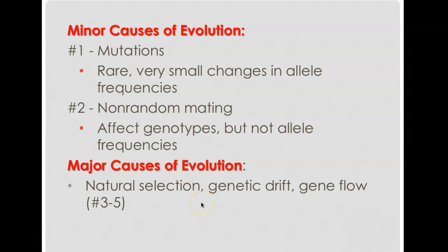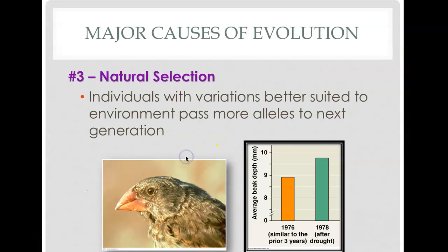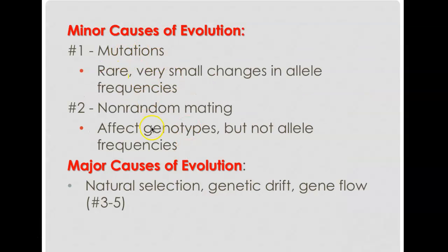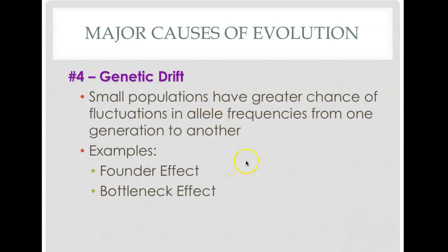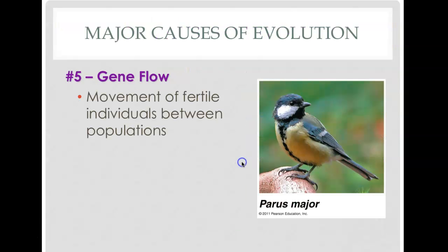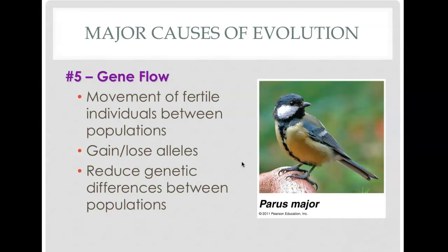Starting next class, I'm going to do Hardy-Weinberg problems with you, and we have practice problems on page 247 to go over. Once we're done with Hardy-Weinberg, I'll pick up with natural selection, then genetic drift, then gene flow. After that I'll finish with a few more vocabulary words and cover sexual selection, and that'll be it for chapter 21. That's where I'm going to stop today — talk to you later, bye.